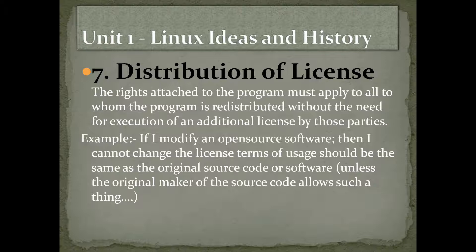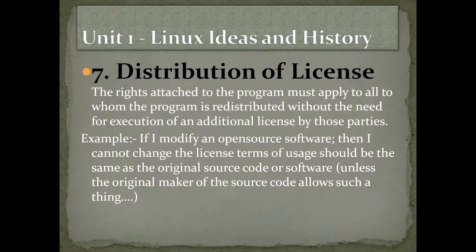Distribution of license: the terms of the program must apply to all to whom the program is redistributed without the need for execution of an additional license by those parties. That means if I modify an open source software, I cannot change the license terms of usage — they should be the same as the original source code. If you take my media player source code, develop it, and change it, you cannot give different rights to it; it should be released under the same terms and conditions that I defined, because that is my original source code.